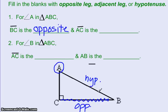And then AC, that would be this one sitting right here next to it. Well, it's not the hypotenuse, so it will be the adjacent one.